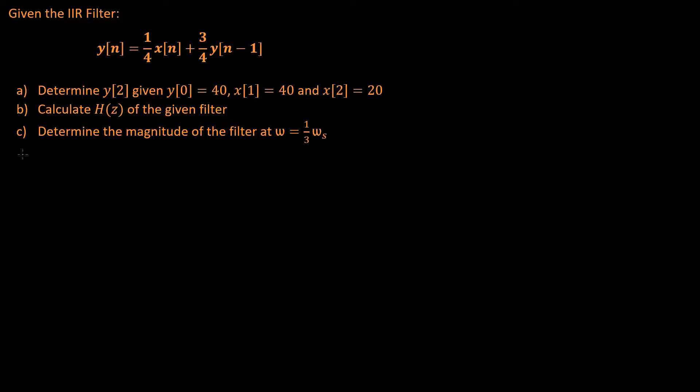Therefore, y of 1 is equal to 1 quarter times x of 1, which is 40, plus 3 quarters times y of 1 minus 1, which is 0, which is also equal to 40.